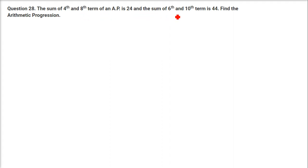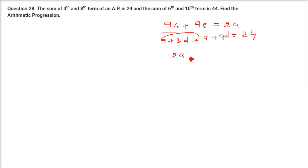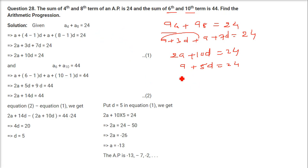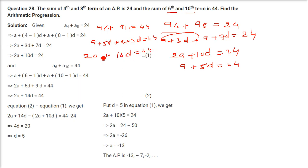The sum of the 4th and 8th terms of an AP is 24, and the sum of the 6th and 10th terms is 44. Find the arithmetic progression. A4 + A8 = (A + 3D) + (A + 7D) = 2A + 10D = 24, so A + 5D = 12. For the second condition: A6 + A10 = (A + 5D) + (A + 9D) = 2A + 14D = 44, so A + 7D = 22.